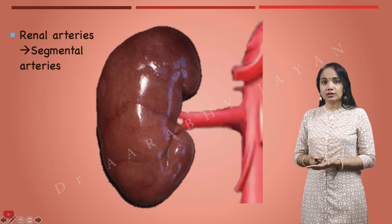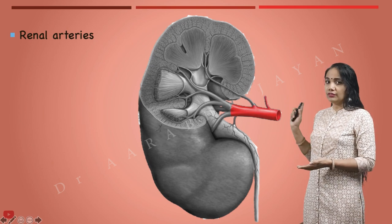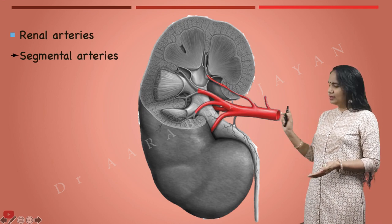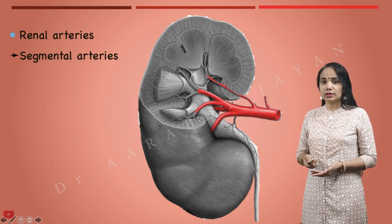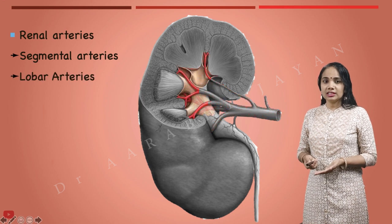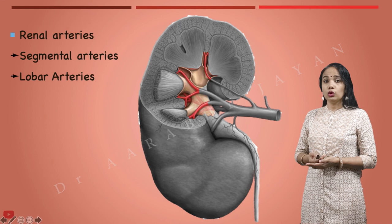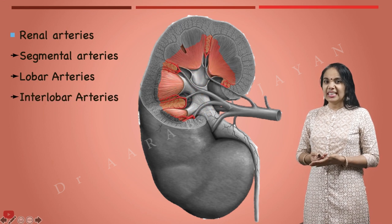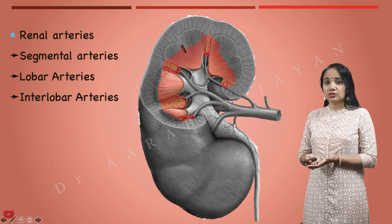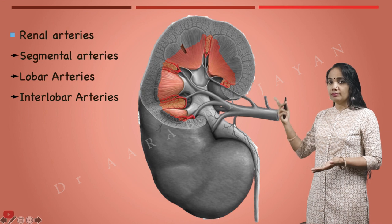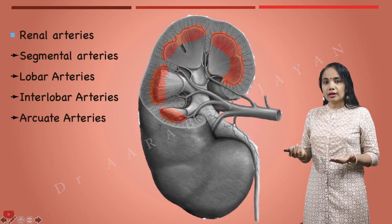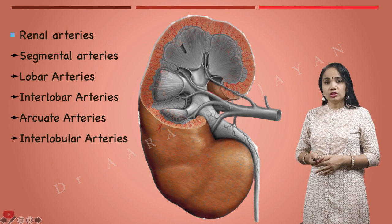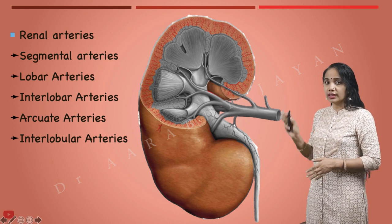Now let's see where these arteries divide further. We have the renal artery giving rise to five segmental arteries, which enter the substance of the kidney. The next hierarchical arteries are the lobar arteries, which supply the minor and major calyces. Once inside the kidney, they divide into interlobar arteries — paired vessels between the pyramids. The interlobar arteries then reach the base of the pyramids and arch across as arcuate arteries.